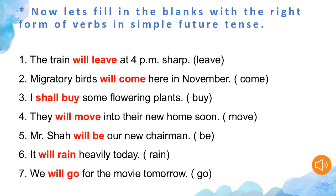Next sentence: Mr. Shah ___ our new chairman. The right form of be is will be. Next: it ___ heavily today. The right form of rain in future tense is will rain. Last sentence: we ___ for the movie tomorrow. The right form of go in future tense is will go.